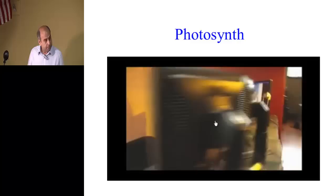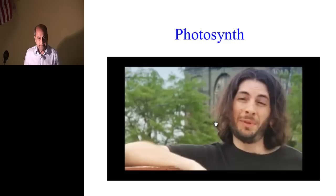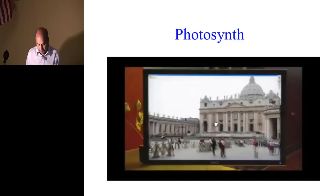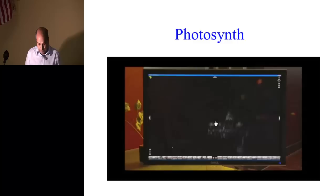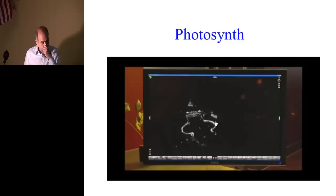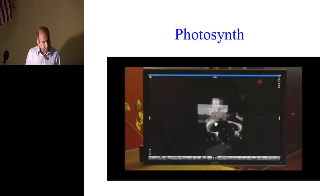You can think about what Photosynth does as linking images together. Whenever images are taken in a common environment, it's as if you form a hyperlink between them. The emergent network of hyperlinks between images can be built by a crawler going out and searching the whole web — it's a very powerful idea. Here's a shot of St. Peter's Basilica where we can navigate through hundreds of photos. Here's a point cloud model constructed from all of those images.